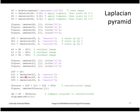The program computes the residuals between the approximations and the originals, then adds up all the residuals together with the smallest approximation to get a reconstructed original. Finally, it takes the difference between the original image and the reconstructed original and looks at the maximum value in that difference.